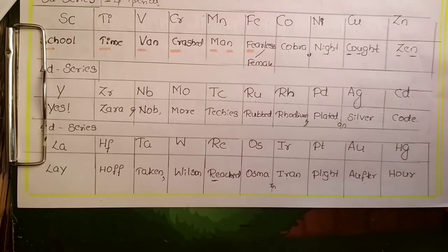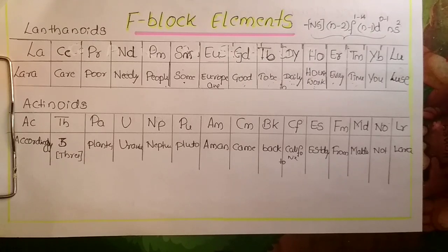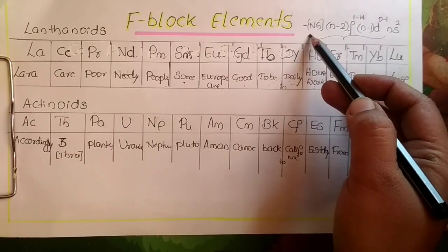F block elements are generally known as inner transitional elements. They include two series: lanthanoid series and actinoid series. The general electronic configuration I have written over here.